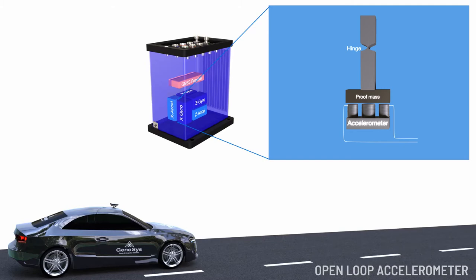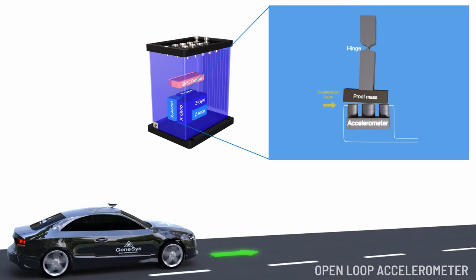The ADMA will be mounted in the vehicle. As soon as the vehicle is accelerating, the proof mass moves in the opposite direction. This results in a changing voltage that is used as the acceleration value.